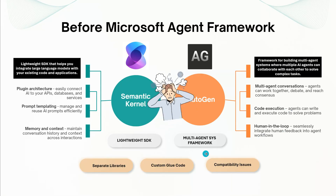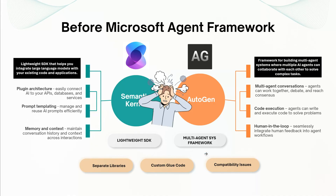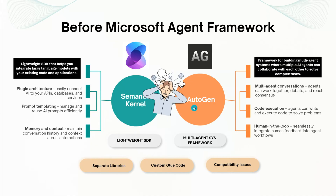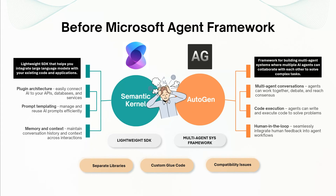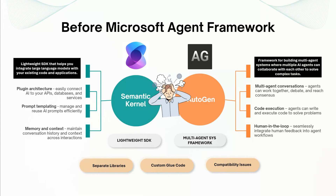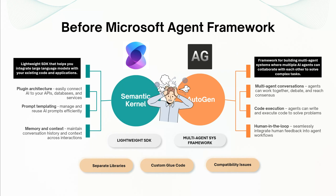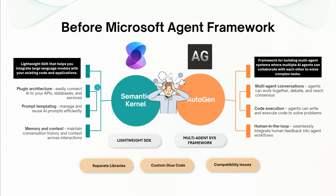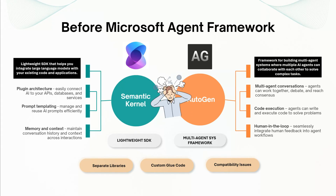Now here is the challenge developers faced — using both of them together was complicated. Imagine you need to deploy a customer support system where multiple AI agents collaborate to resolve tickets, and those agents also need to connect to your CRM. You would need AutoGen for multi-agent orchestration and Semantic Kernel for integrations.